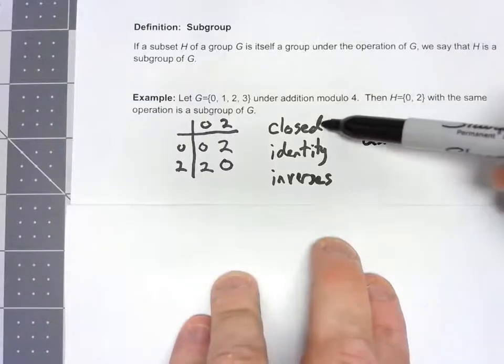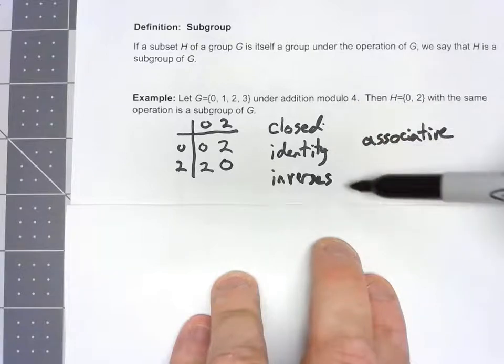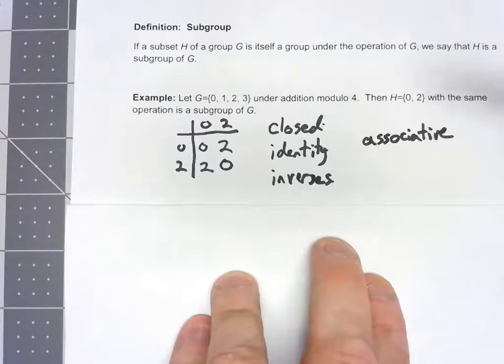So we've got a closed binary operation. It has an identity. It has inverses. The operation is associative. Therefore, that is in fact a group. And therefore, it's a subgroup of G.